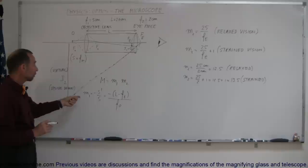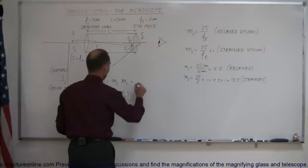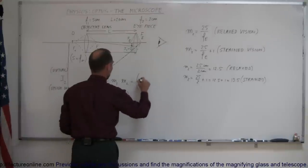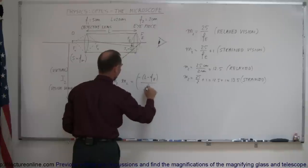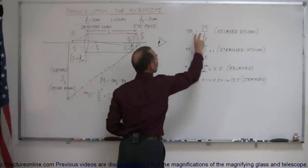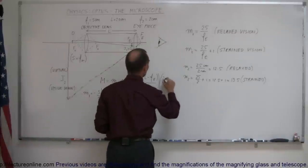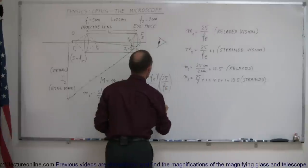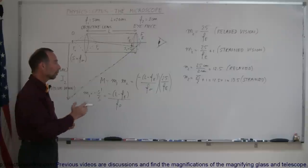So we can say that M₁ = −(L − f_e) / f_obj. The total magnification of the microscope is then M₁ × M₂, which for relaxed vision becomes −(L − f_e) / f_obj × 25/f_e. Let's plug in the numbers to get a feel for what that equals.